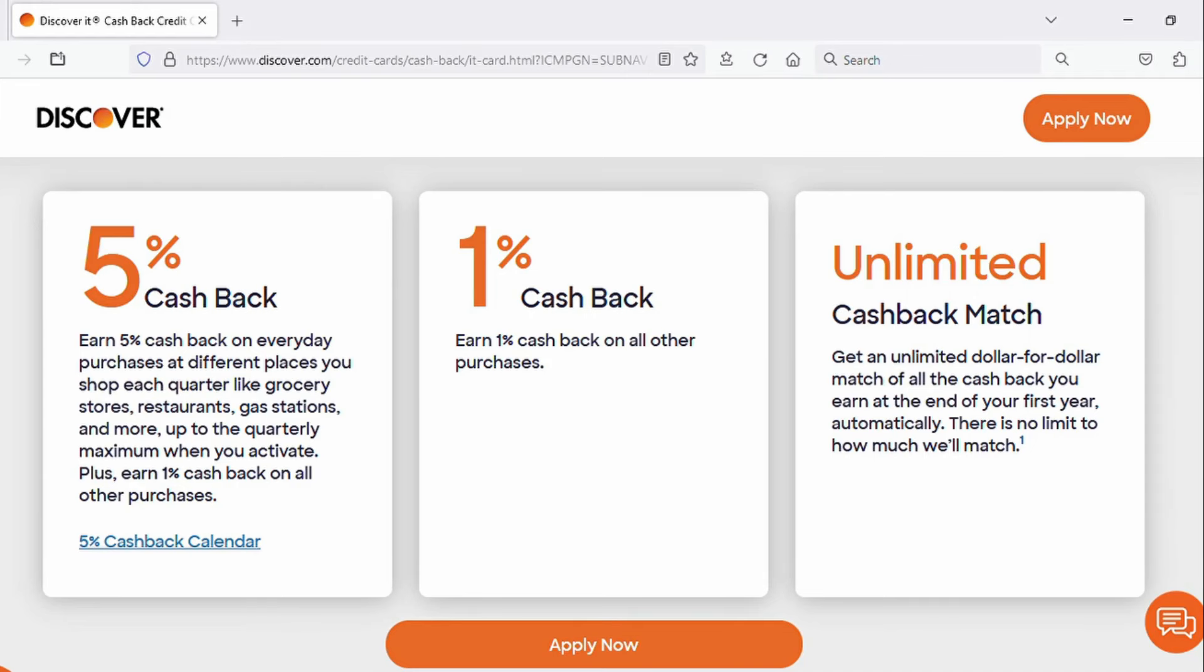No annual fee. You've got 5% cash back in those rotating categories that change each calendar quarter, 1% cash back on everything else. Same cash back bonus where you get your rewards doubled after the end of that first year.